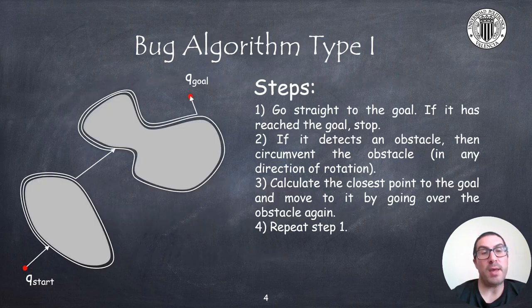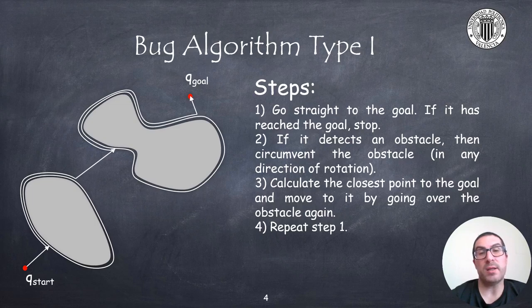Bug type 1 algorithm is a complete algorithm with implementation steps that are quite simple. The robot moves in a straight line towards the goal until it detects an obstacle or reaches the goal. In case of detecting an obstacle, the robot moves around its perimeter and once it has completed the full loop, decides to move to the closest point to the goal, moving again around the perimeter.